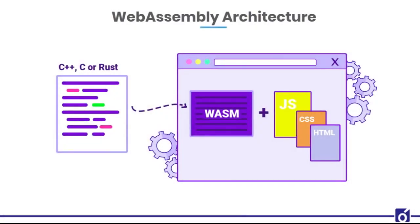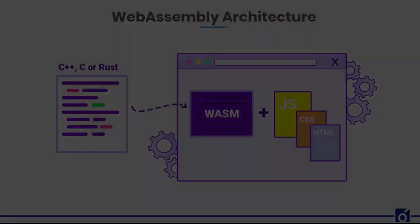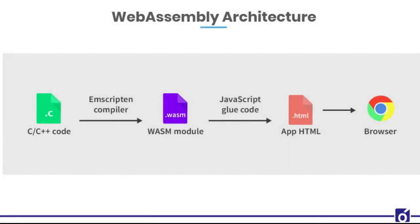This is the architecture of WebAssembly. We can write code in a programming language like Rust, C++ or C, then compile that code into WebAssembly — a .wasm file — which is then executed with the help of JavaScript glue code. This is the flow of WebAssembly: code is converted to .wasm modules by the compiler, and with the help of JavaScript glue code it can run on the browser.